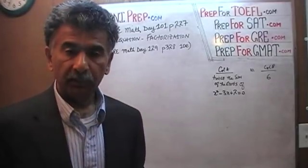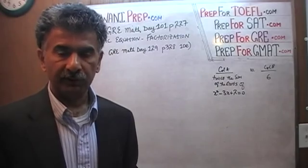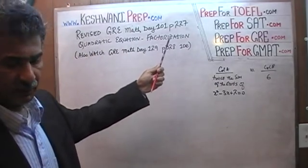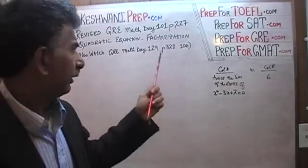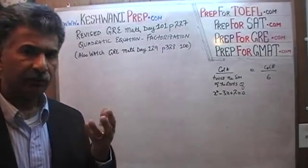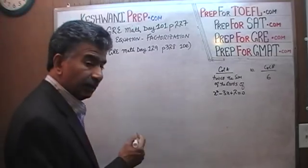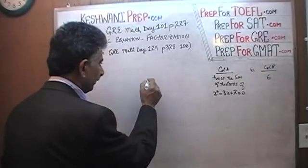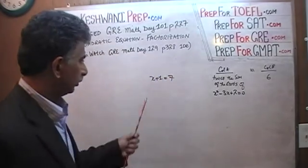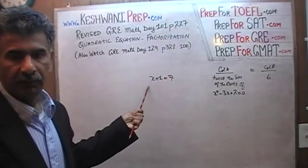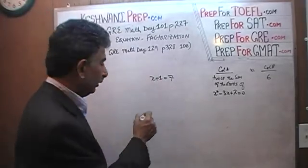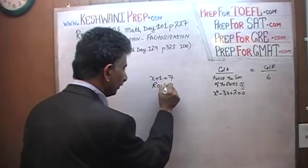Let's find out. What does 'root' mean? Root of an equation means the solution to the equation. For example, for the linear equation x + 1 = 7, the root is 6, because 6 + 1 = 7. The number 6 is called the root — root just means solution.